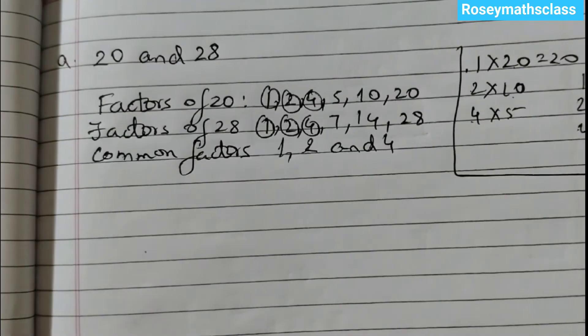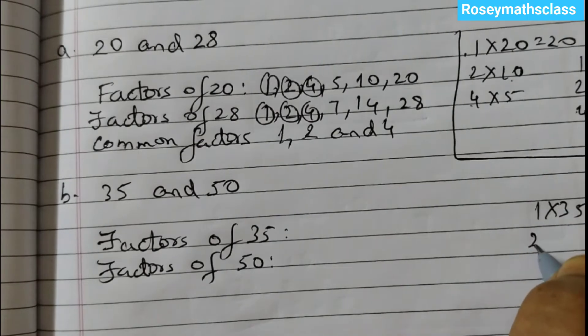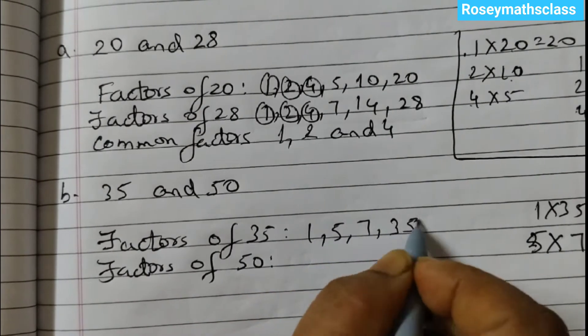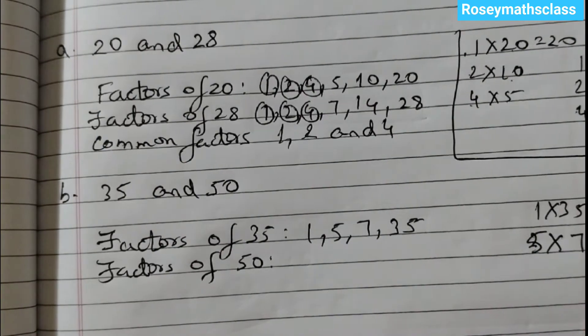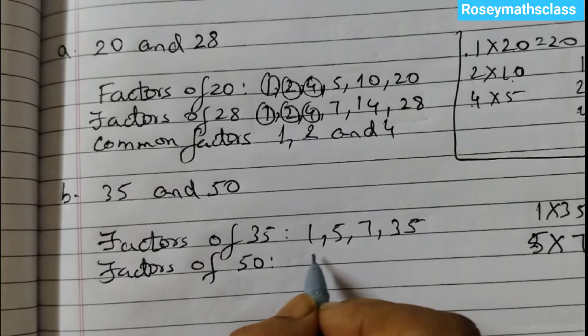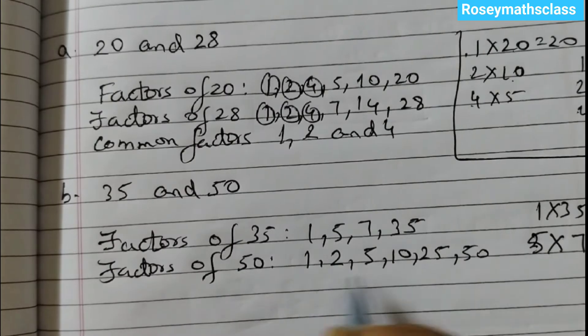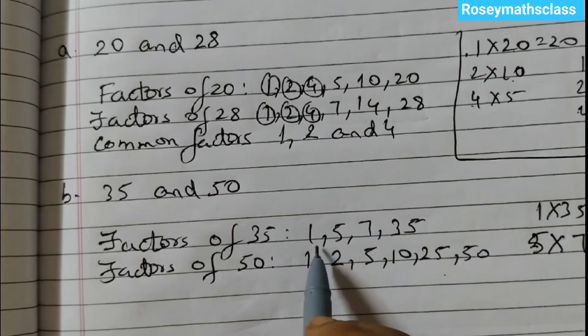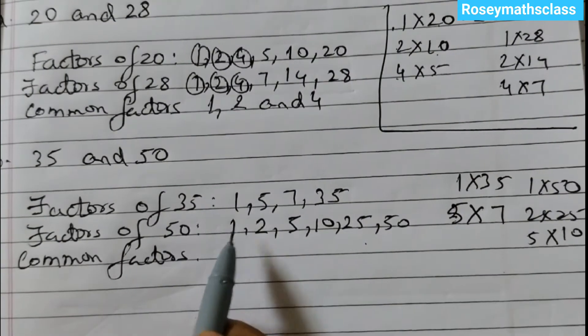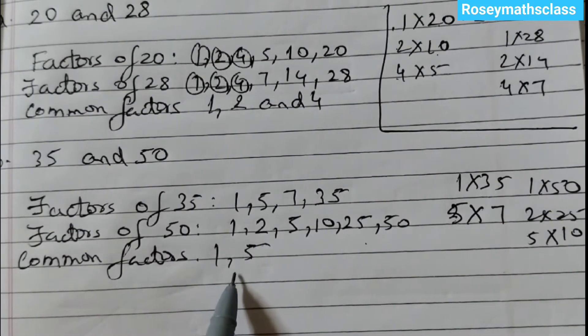Next one is 35 and 50. First we will find out the factors of 35: 1 into 35, 2 doesn't go, 5 into 7. So the factors are 1, 5, 7 and 35 itself. And for 50: 1 into 50, 2 into 25, 5 into 10. So it's 1, 2, 5, 10, 25 and 50. So all these numbers, in the table of all these numbers you will get 50. Similarly, in the table of all these numbers you will get 35. That's why we call them the factors. The common factors: 1 is a common factor, 5 is a common factor. So only 2 factors. 1 and 5 are the common factors.